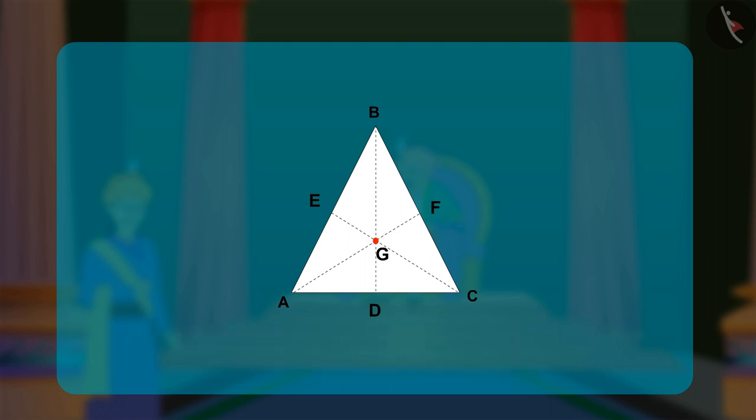In this triangle, point G is the centroid of the triangle, because all the lines are intersecting at this point, explained Birbal.